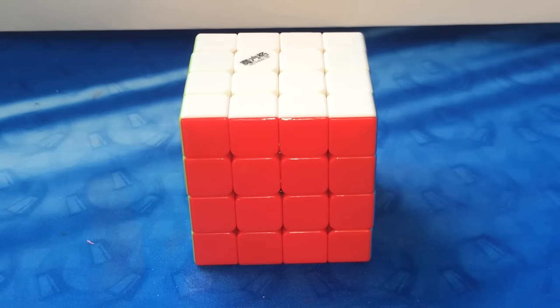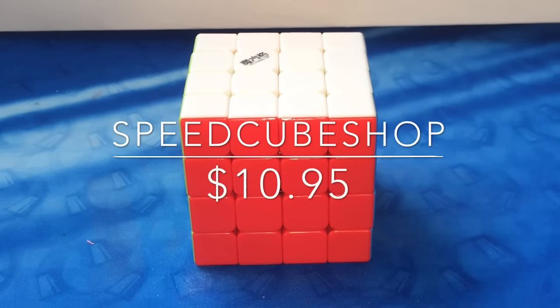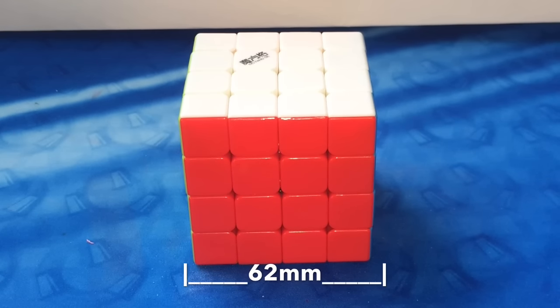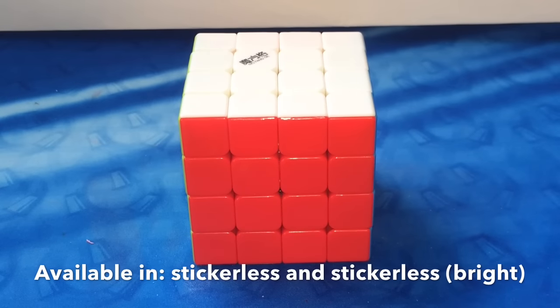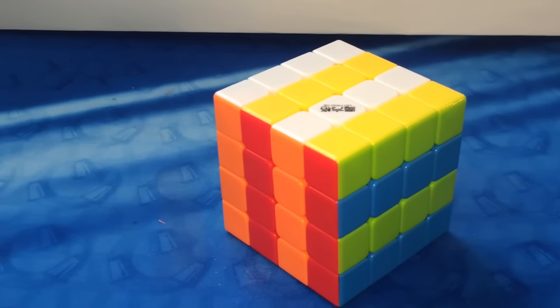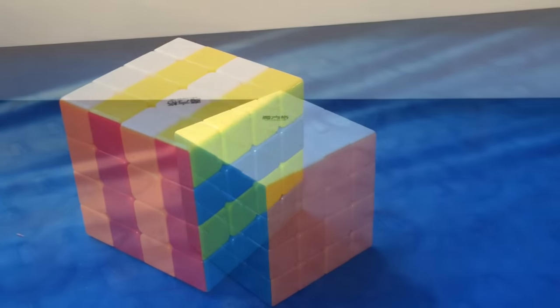The Qiyi Storm 4x4 is available at Speedcube shop for $10.95, which is a great price for a 4x4 of this standard. It has the standard size of 62mm on each side and is available in bright and normal stickerless plastic. The bright shades as shown here are very pleasant to the eye, and I've had no problem discerning the colors.